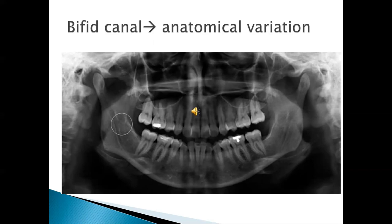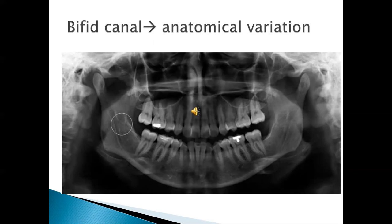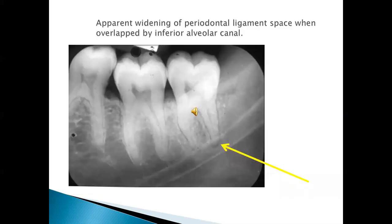Here is one variation of the inferior alveolar canal. If you look at the ramus area, the inferior alveolar canal actually has a bifid root — one passage goes straight into the anterior border of the ramus and the other passage runs the normal route. Remember, the roots of a molar, especially the third molar, can be placed on the buccal aspect of the canal, within the canal, or on the lingual aspect. In any situation, the periodontal ligament space surrounding the root appears widened when it is overlapped by the canal.